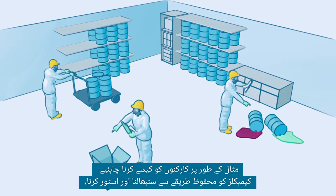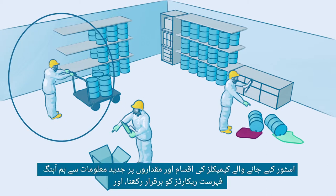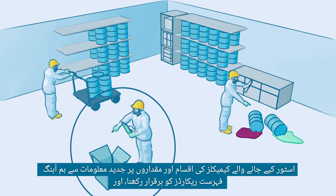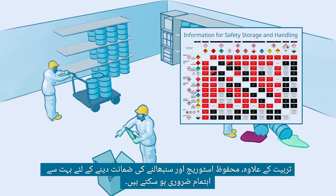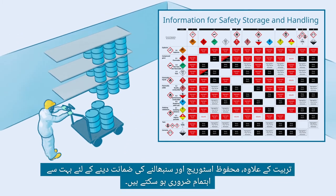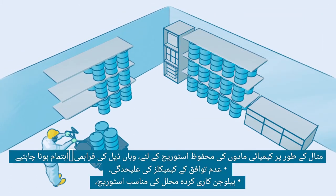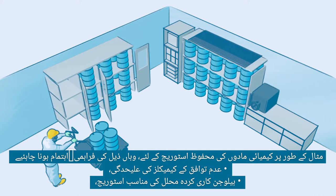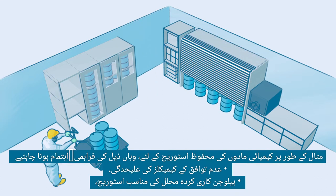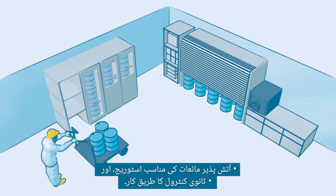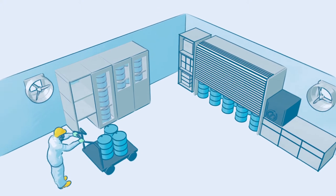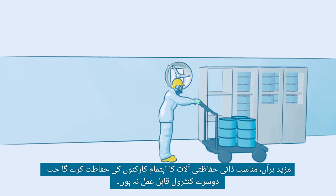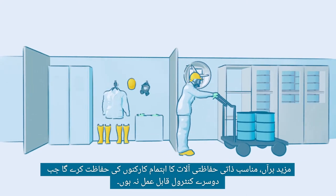For example, how workers should safely handle and store chemicals. Maintain updated inventory records on types and amounts of chemicals being stored, and respond to emergencies such as a leak or spillage. In addition to training, provisions for safe storage include separation of incompatible chemicals, adequate storage of halogenated solvents, flammable liquids, and secondary containments. Engineering controls such as ventilation will help to contain and reduce the release of chemicals, and adequate personal protective equipment will safeguard workers when other controls are not feasible.